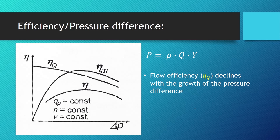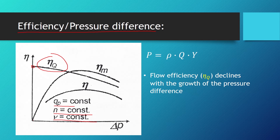Now we are going to look at a couple of diagrams to see the relationships between mechanical and flow efficiencies in relation to pressure difference, RPM, and the temperature of the work fluid. The first relationship is between efficiency and the pressure difference, while maintaining constant specific volume, constant RPMs, and constant kinematic viscosity of the work fluid. The flow efficiency has its maximum value where the pressure difference is zero — intuitively, no large pressure difference means less restriction on flow — and it slowly declines with the rise of the pressure difference.